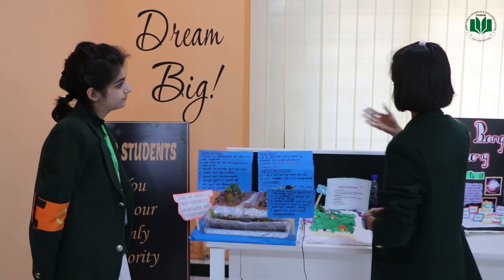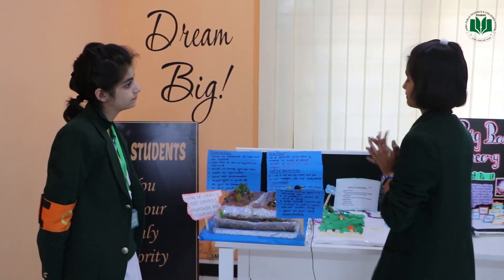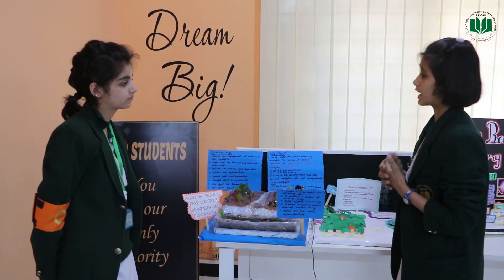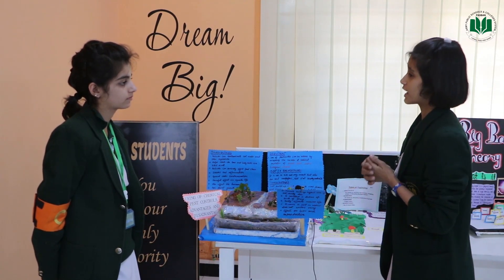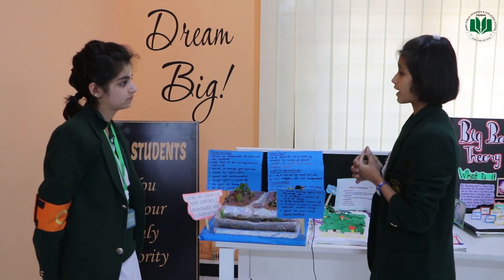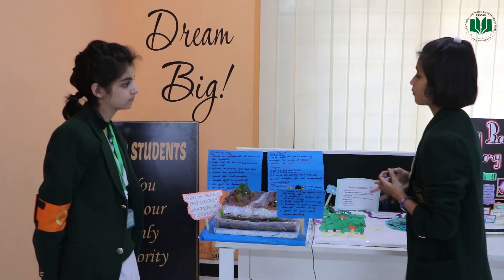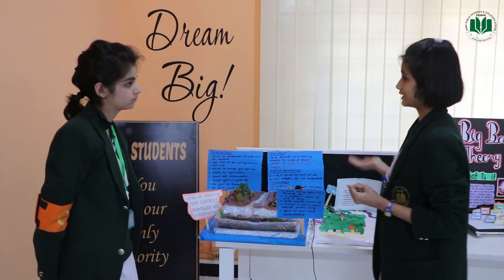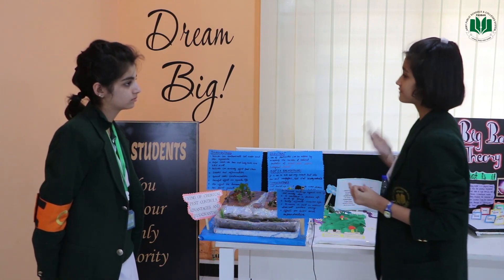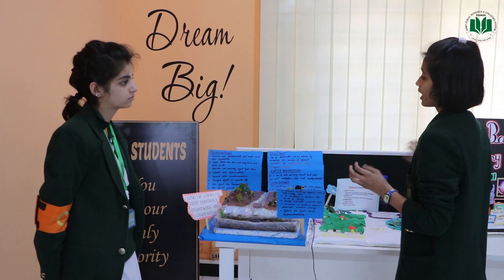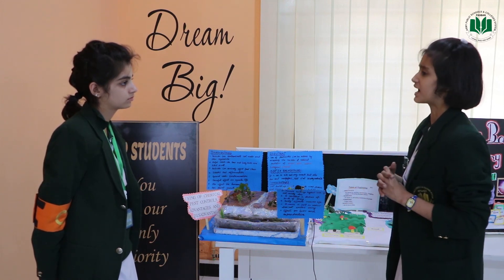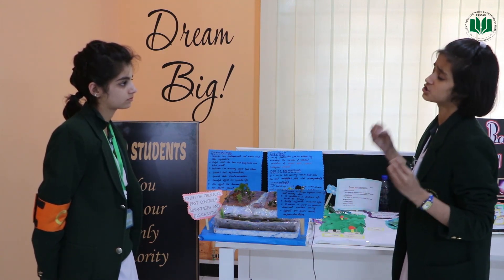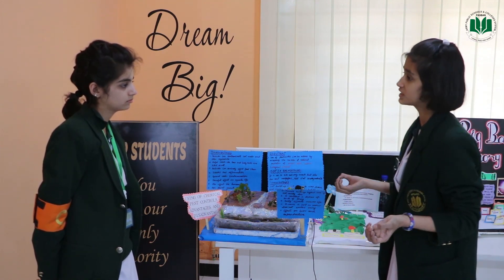I've heard about a bad insecticide called DDT, which is short for dichlorodiphenyltrichloroethane. Its chemical composition includes chlorine, ethane, and phenyl. It is known as a bad insecticide because it builds up and is not biodegradable.